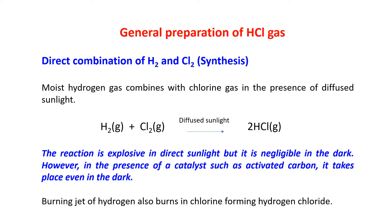General preparation of HCl gas: it is formed by the direct combination of hydrogen and chlorine gas, that is the synthesis of H2 and Cl2. Moist hydrogen gas combines with chlorine gas in the presence of diffused sunlight — this is very important. H2 gas plus Cl2 gas in diffuse sunlight produces 2 HCl gas. The reaction is explosive in direct sunlight but negligible in dark.